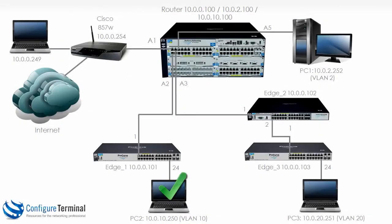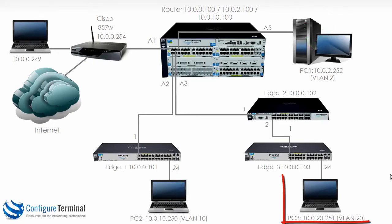PC2, PC1, and our recording PC can communicate — inter-VLAN routing is working. Now let's configure PC3 in VLAN 20.